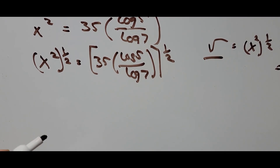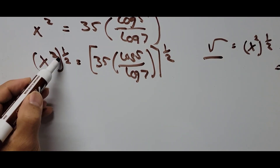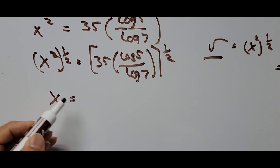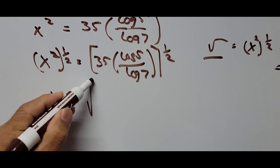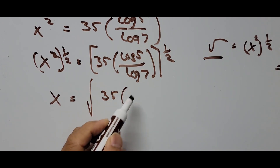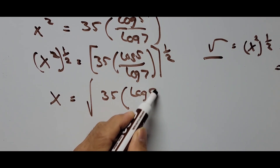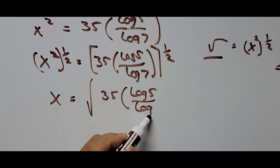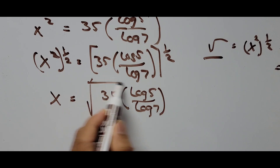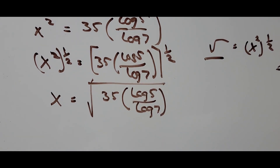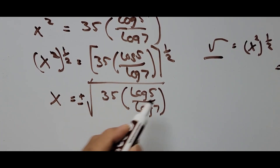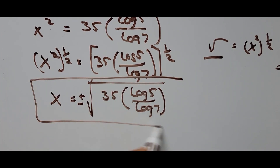So x equals the square root of 35 times logarithm of 5 divided by logarithm of 7. This gives both a positive and negative answer, so that's our answer.